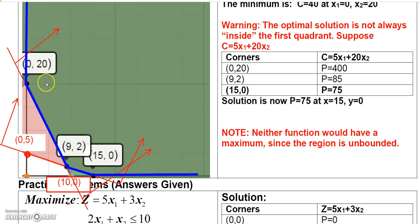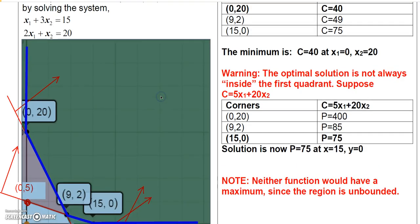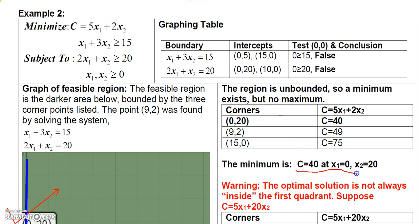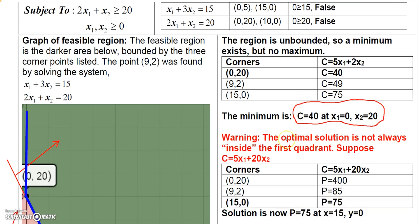So our three corner points are (0, 20), (9, 2), and (15, 0). The objective function is 5x₁ + 2x₂. Plugging in the corners: (0, 20) gives 40; (9, 2) gives 49; and (15, 0) gives 75. The corner point (0, 20) gives the minimum of C = 40, when x₁ = 0 and x₂ = 20.